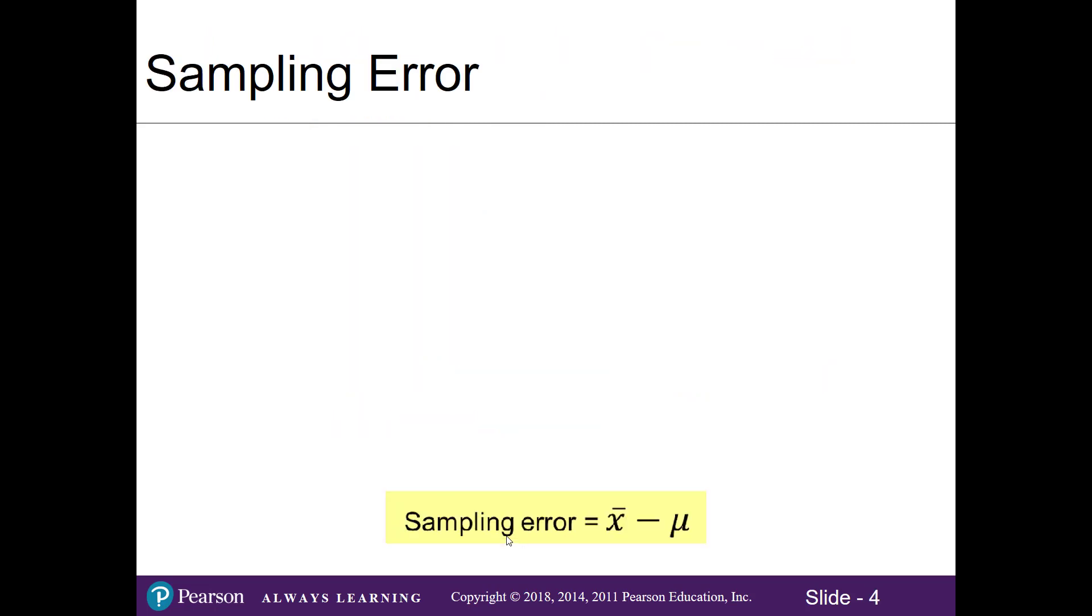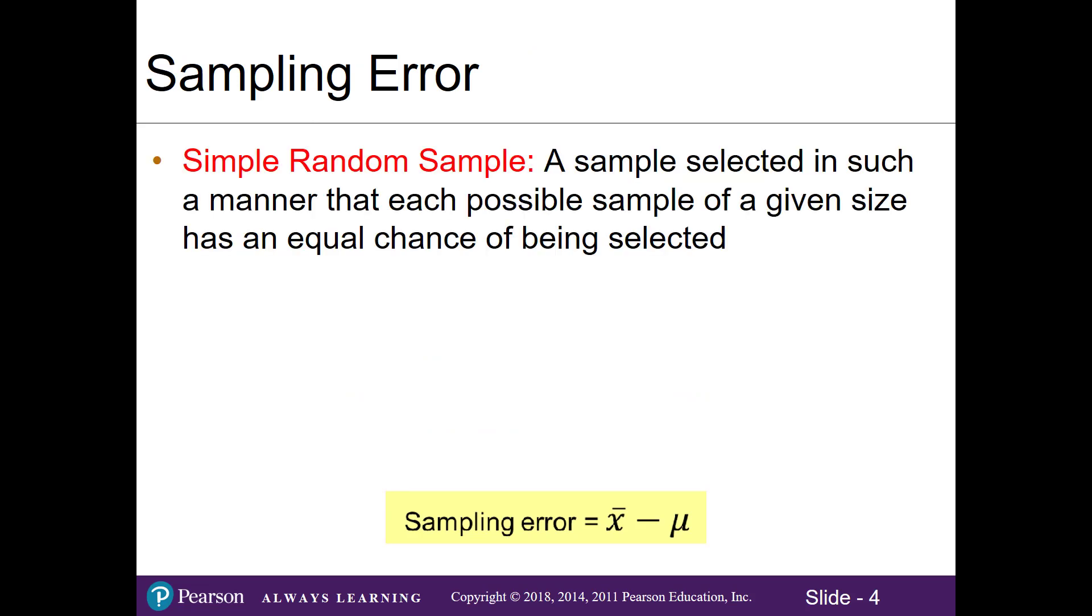Some things to note about the sampling error is that we will be using simple random samples. Recall this is where we're selecting a sample from the population and every sample has the same chance of being chosen.